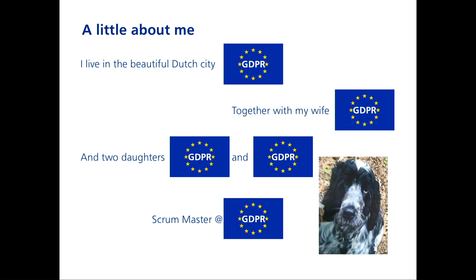I live in the beautiful city of The Hague, together with my lovely wife Andy. We have two daughters, Ricky and Lex, a dog named Ulrich. And I'm a scrum master at Dutch Railways.